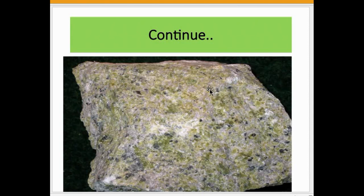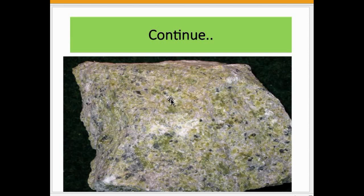Here you can see the feldspar grains that are clearly visible. Apart from that, there are some ferromagnesian minerals also seen here — in greenish color and black-brown color. Granulite actually forms at very high temperature and moderate pressure conditions. The granuloblastic texture shows some irregular and angular fragments that appear like a mosaic formation.